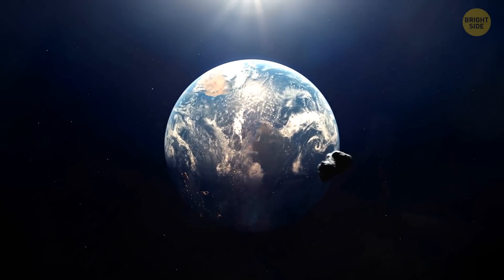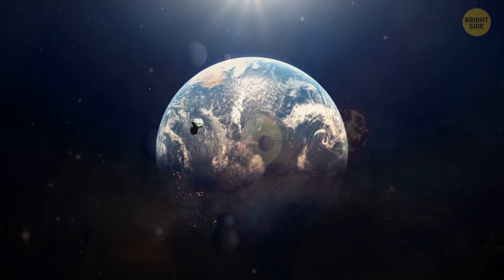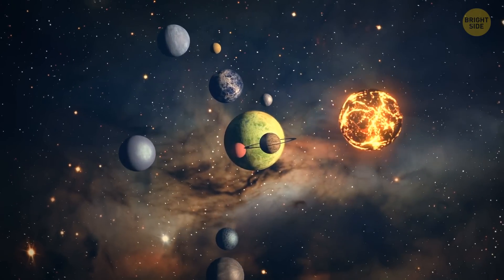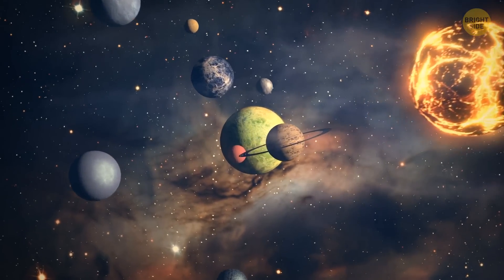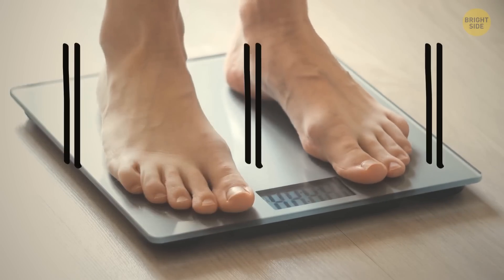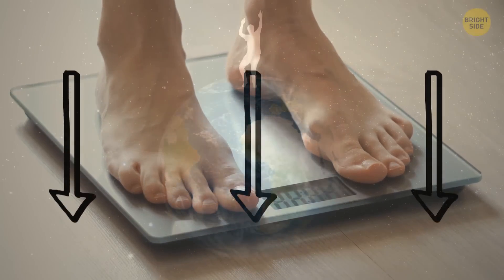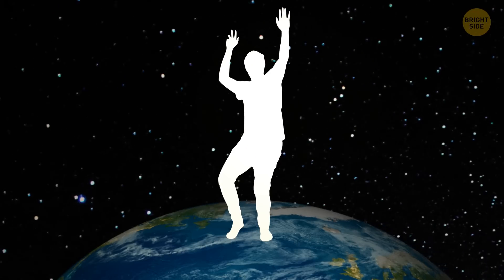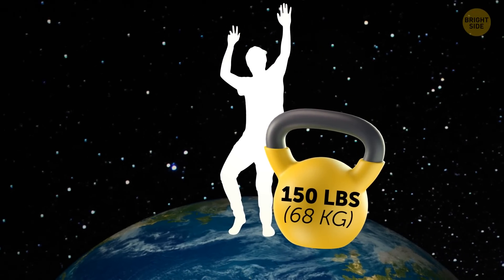Weight and mass outside of Earth are tricky. You can't just put planets, stars, or other space objects on the scale. Generally, when you're on a scale, it measures how hard the gravity of our planet is pulling on you. On Earth, you weigh a certain amount, let's say 150 pounds.